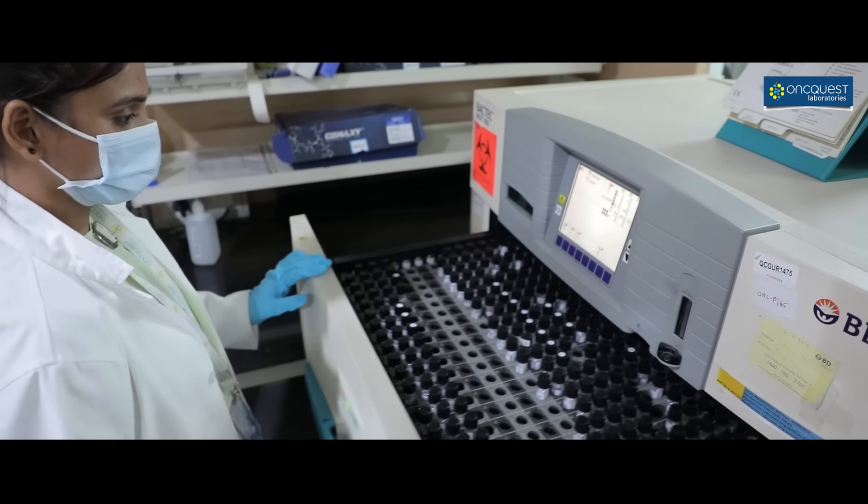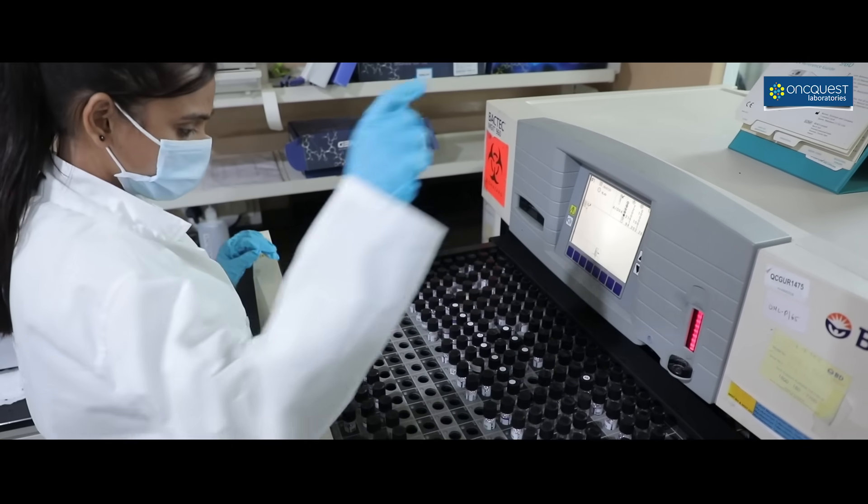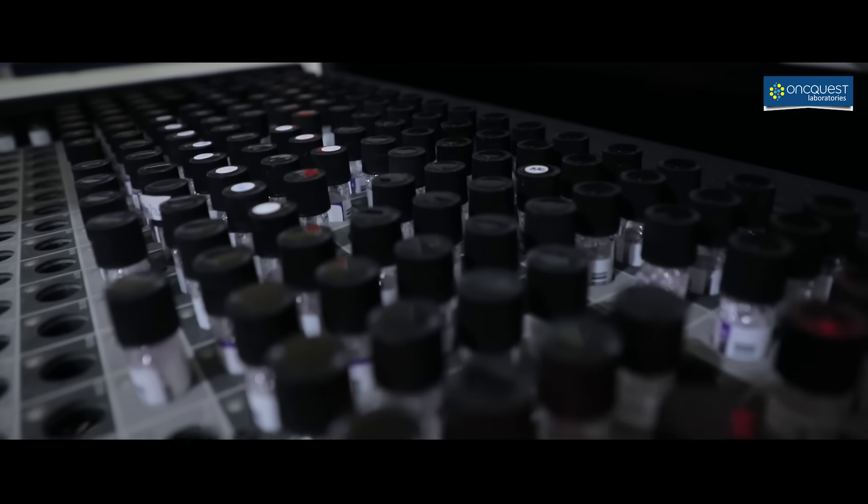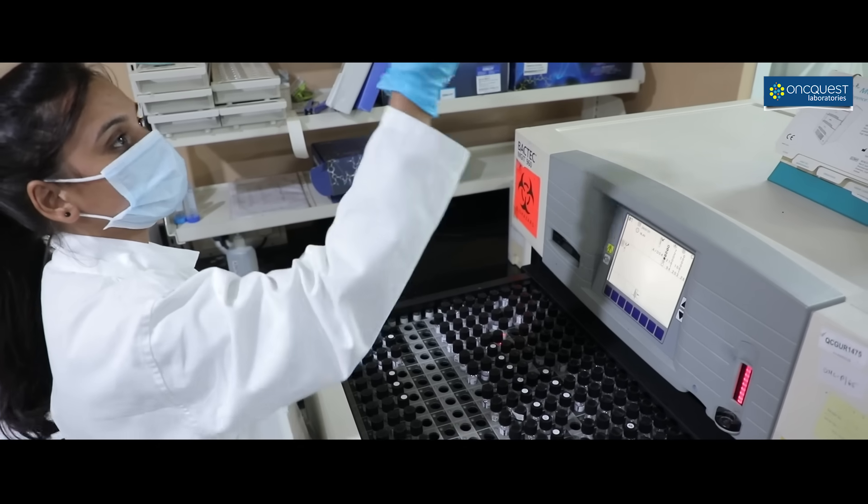MGIT is an automated mycobacterial culture system for mycobacterial growth detection and susceptibility with high throughput. More than 900 samples can be tested in a single instrument. It is more sensitive than conventional solid media and reduces turnaround time to 10 days as compared to 28 to 42 days with the conventional method.